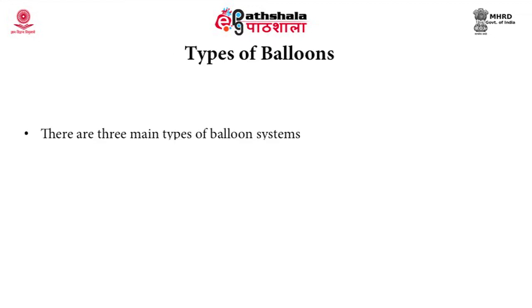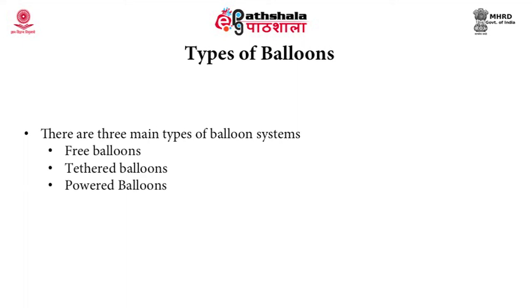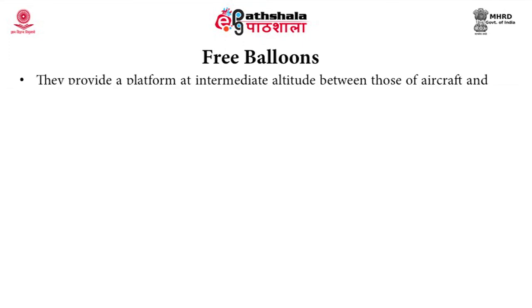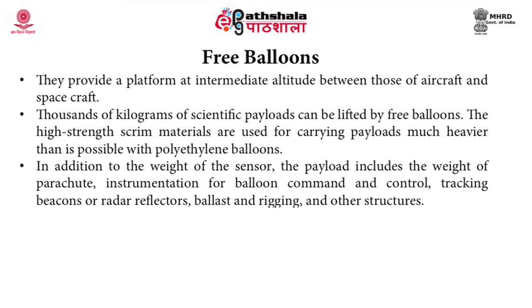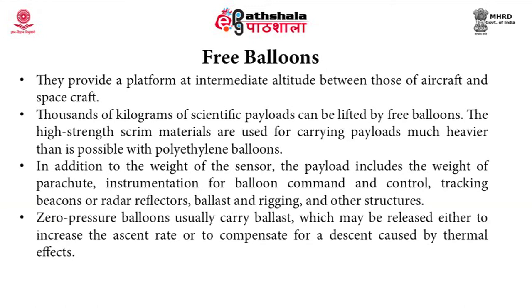There are three main types of balloon systems: free balloons, tethered balloons, and powered balloons. Free balloons provide a platform at intermediate altitude between those of aircraft and spacecraft. Thousands of kilograms of scientific payloads can be lifted by free balloons using high-strength scrim materials. The payload includes the weight of the parachute, instrumentation for balloon command and control, tracking beacons or radar reflectors, ballast and rigging, and other structures.